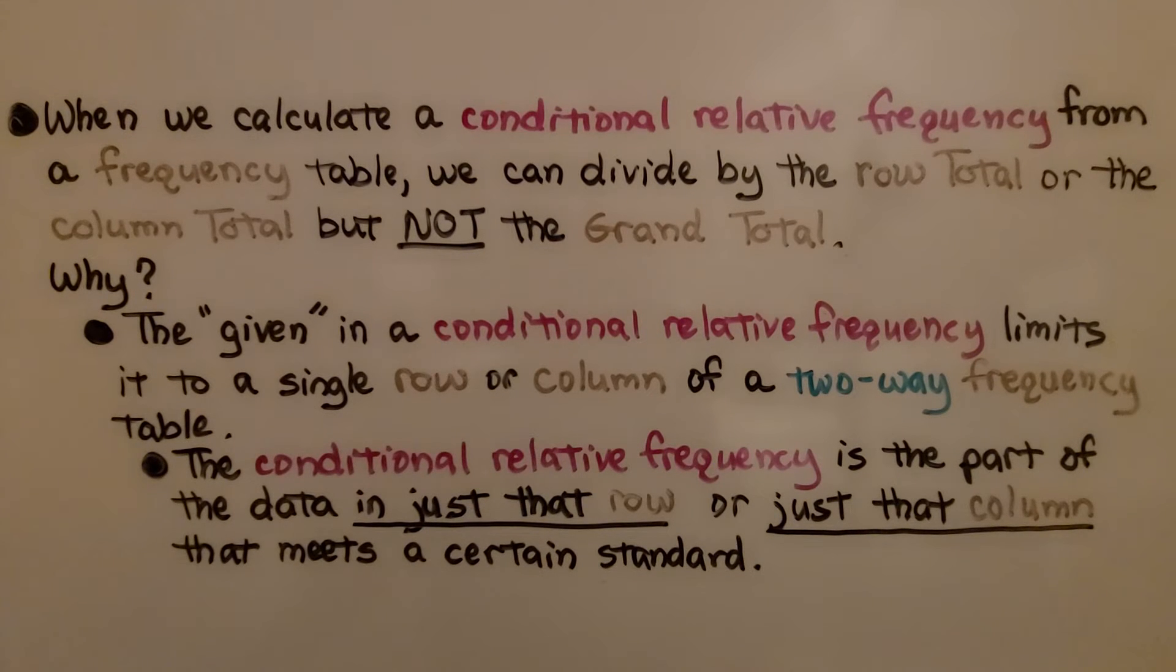When we calculate a conditional relative frequency from a frequency table, we can divide by the row total or the column total, but not the grand total. Why?